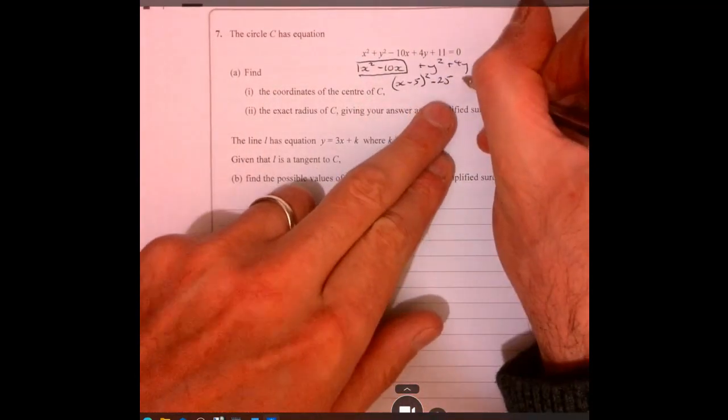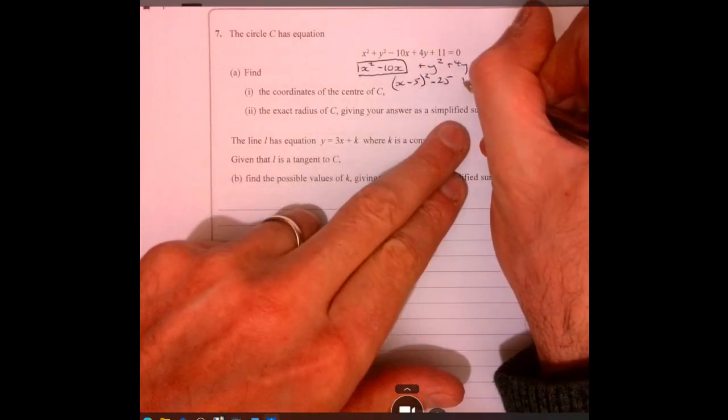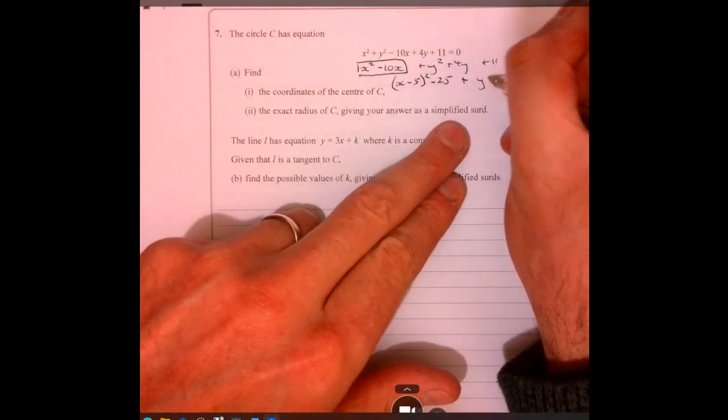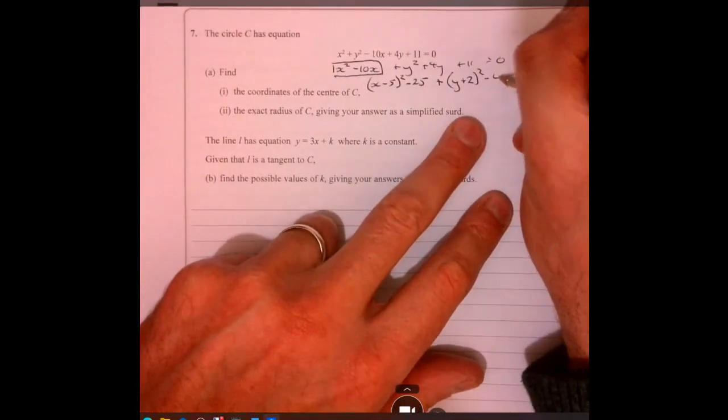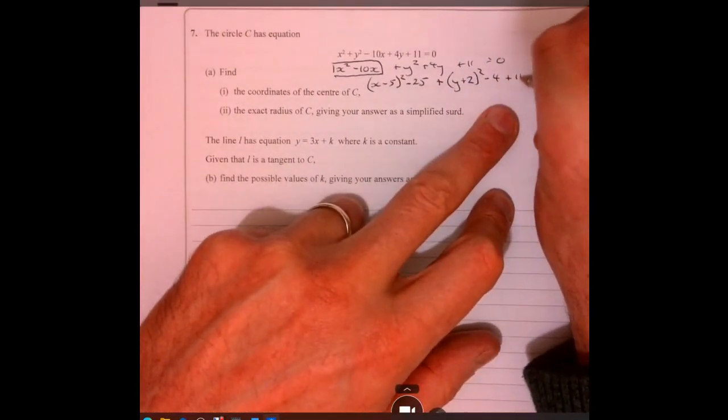And then exactly the same technique over here, so then we're going to have y plus 2, and then we need to take away the 4, and then we've got plus 11.